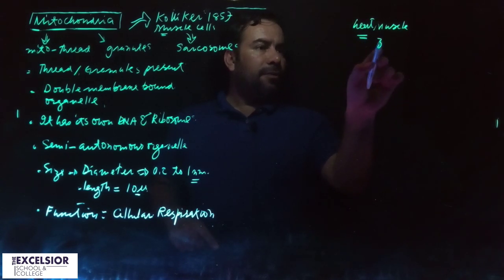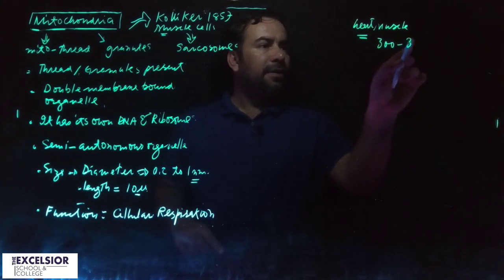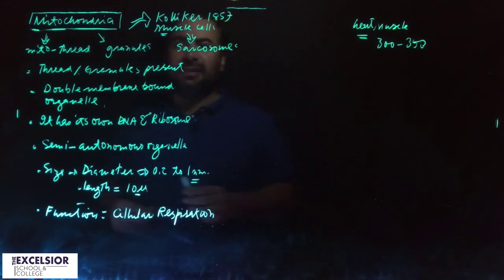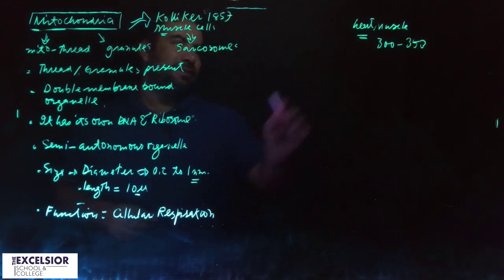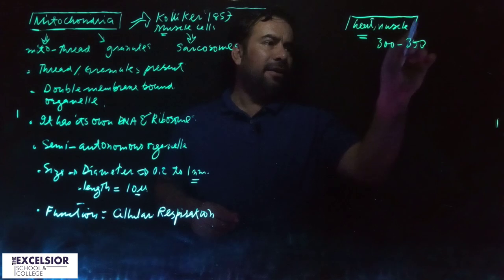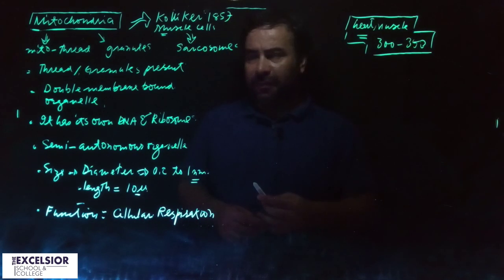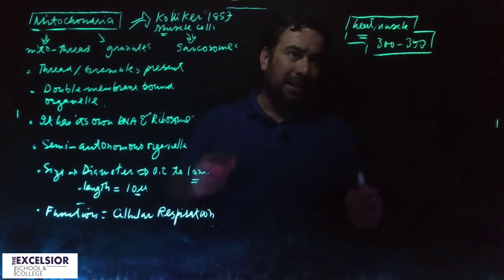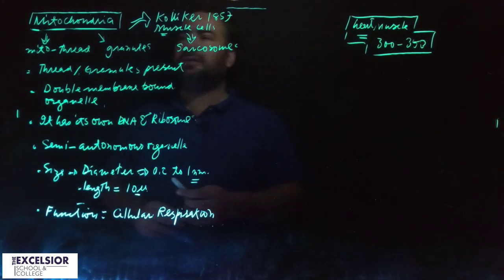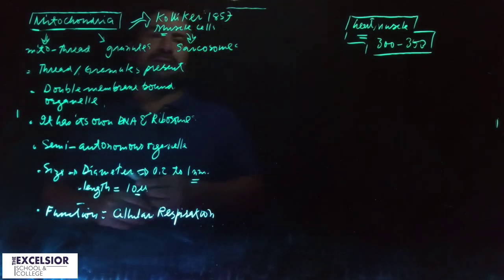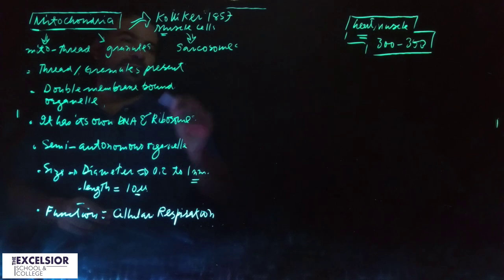In the heart muscle cells, there are 300 to 350 mitochondria present in a single heart muscle. This is something unusual. Kolliker actually found them in the muscles of the heart and this is why he called them sarcosomes.